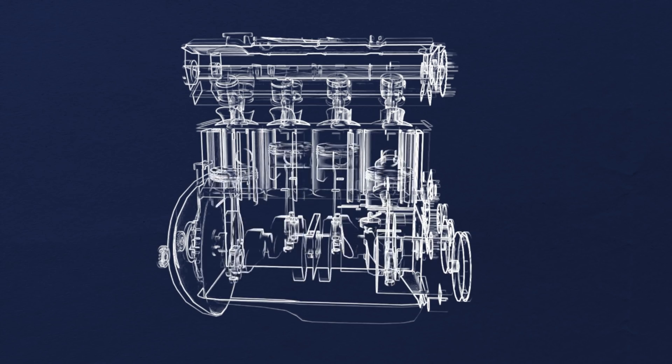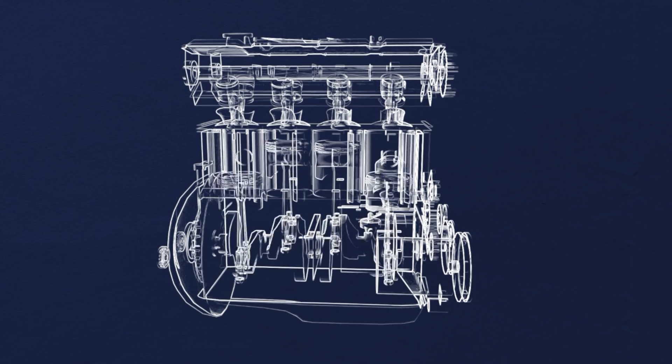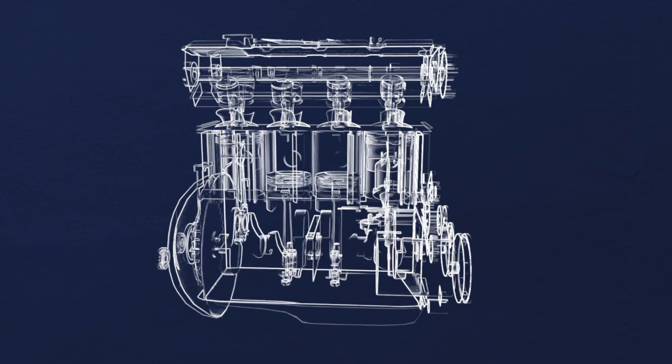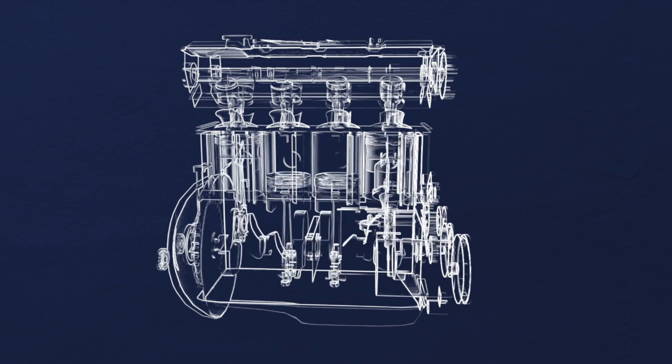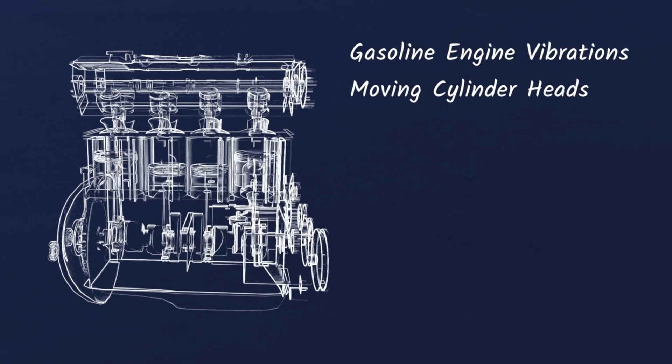Gasoline engines are reciprocating engines, where pistons move up and down in different cylinders. They in turn rotate a crankshaft that converts their vertical motion into rotational motion. This led to early internal combustion cars being very rough with high levels of vibration.